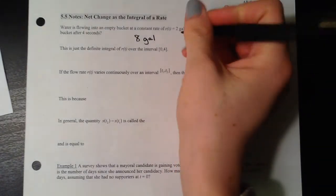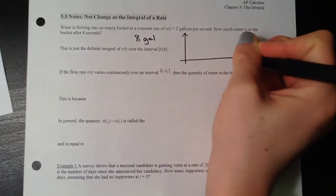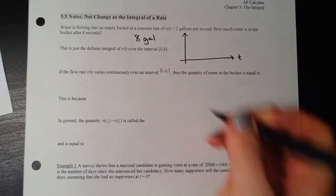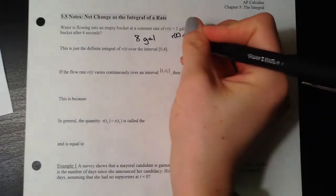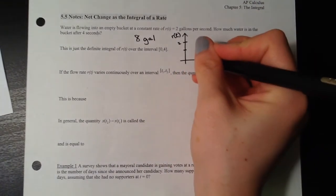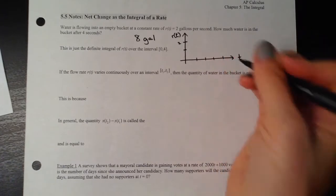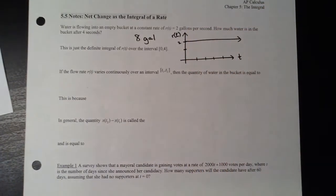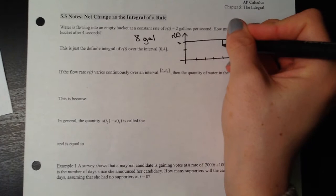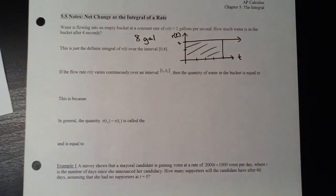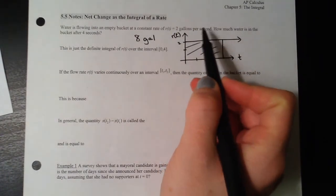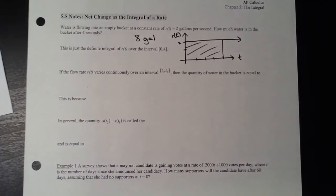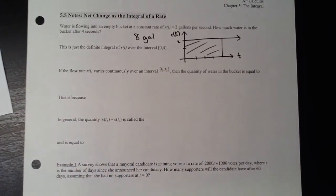We did the same thing with velocity. If we look at a time graph versus the rates, the rate is a constant 2 gallons per second. Going from 1, 2, 3, 4 seconds, we look at this rate function and take the area under the curve from 0 to 4. It's a nice 2 by 4 rectangle giving us 8 gallons. This is just the definite integral of r(t) over this interval.